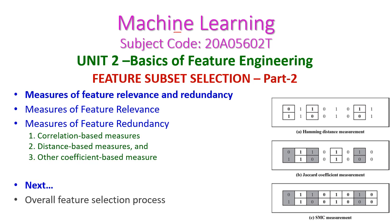In today's machine learning class, we will see the second part of feature subset selection. Here we will discuss the measure of feature relevance and redundancy. We will see the measures of feature relevance and measures of feature redundancy, including correlation-based measures, distance-based measures, and other coefficient-based measures. In the next class, we will see the overall feature selection process.